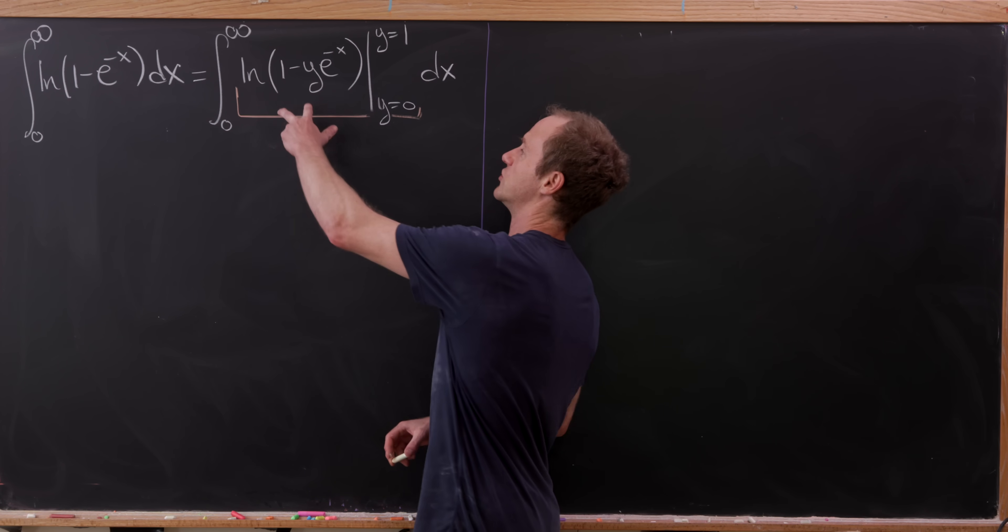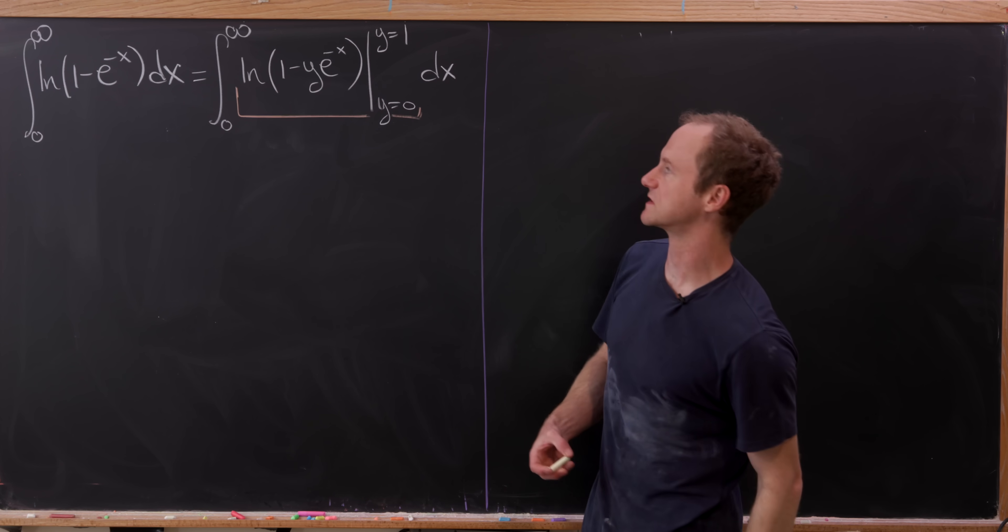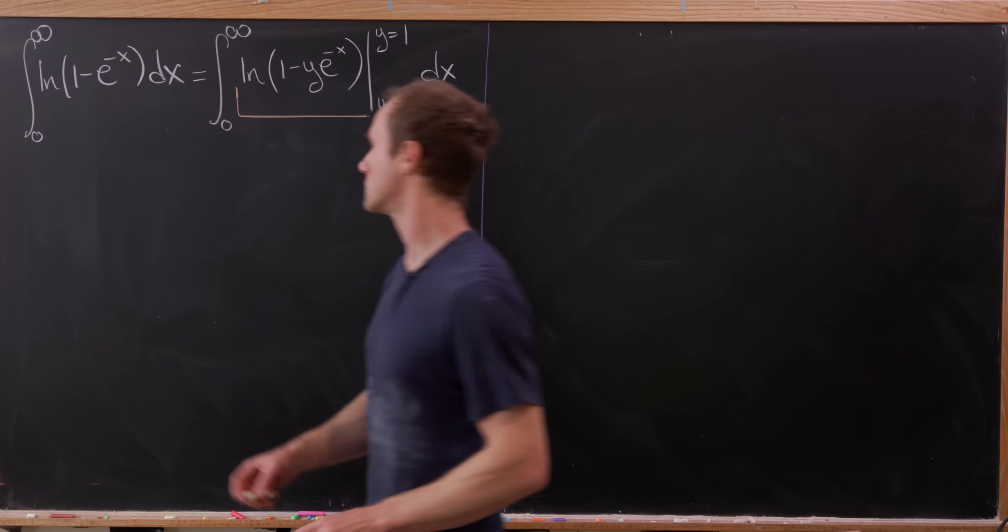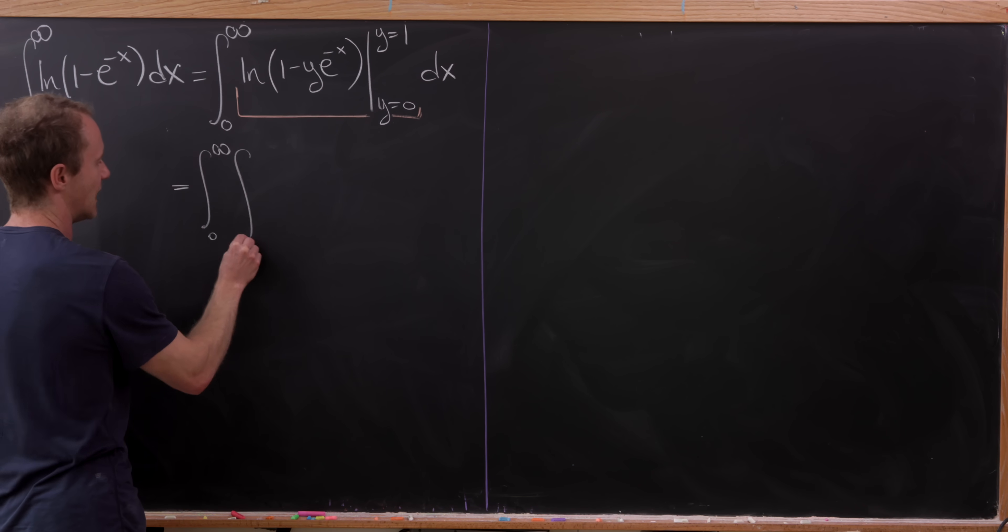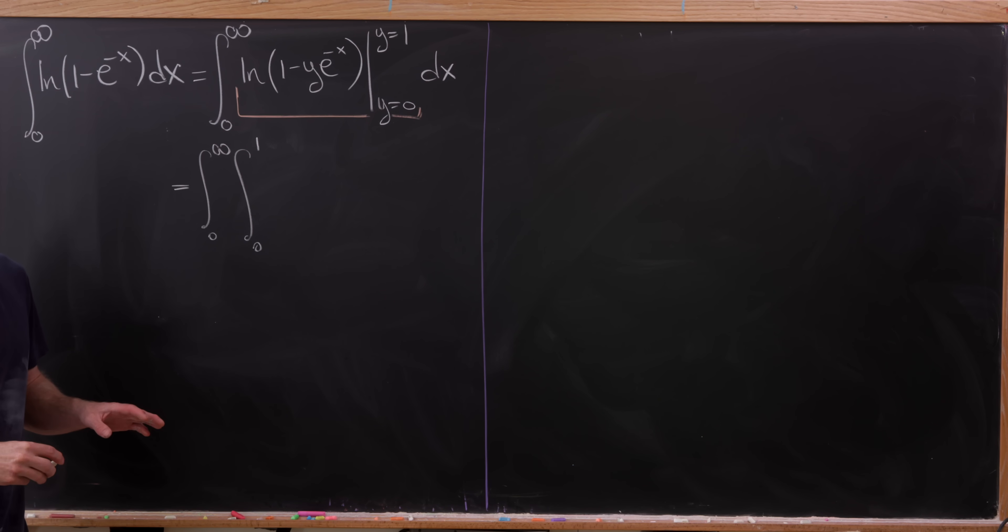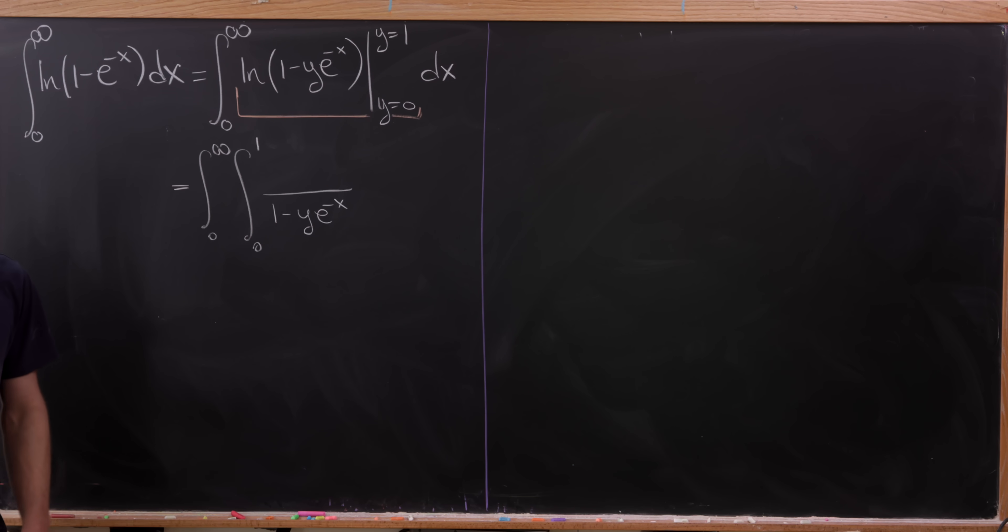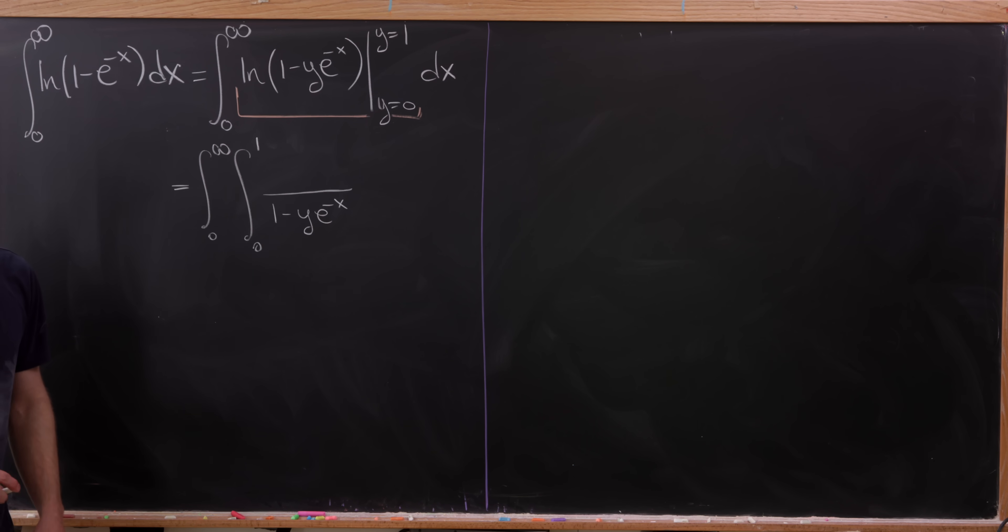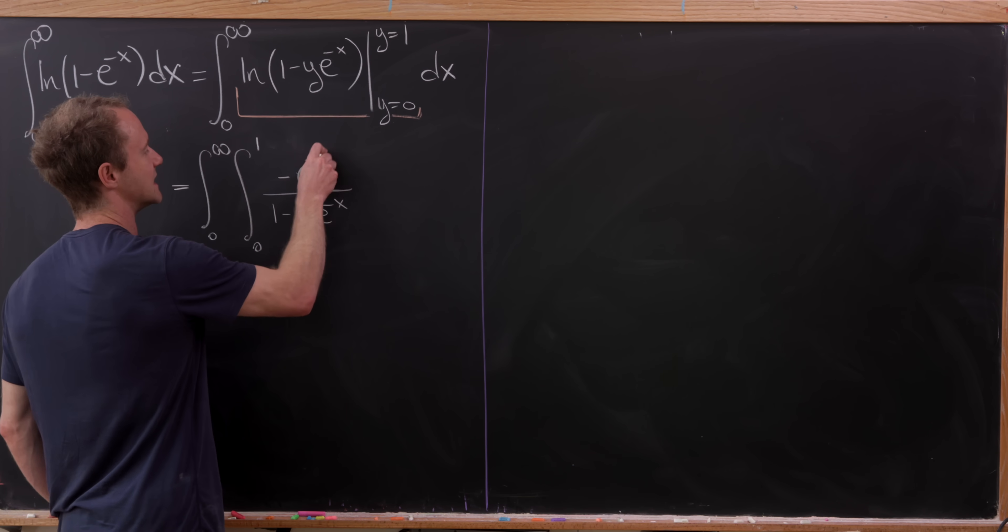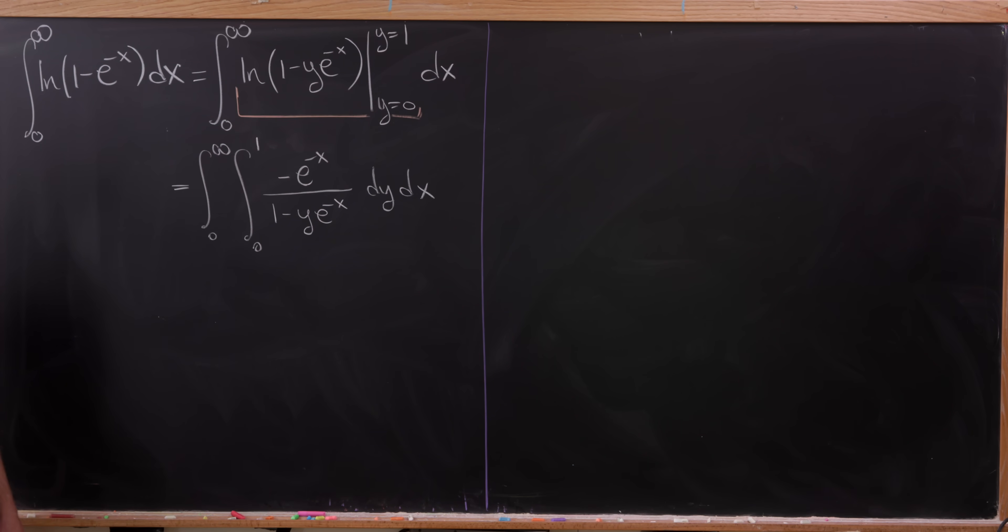In other words, we take the derivative of this function with respect to y, and then introduce an integral from y equals zero to y equals one. So here we have the integral from zero up to infinity, and then the integral from zero up to one. Let's be careful about this derivative with respect to y. We know that we're going to have that argument of the natural log in the denominator. But now we've got to take that argument's derivative with respect to y, which is going to give us minus e to the minus x. Then we have dy dx.